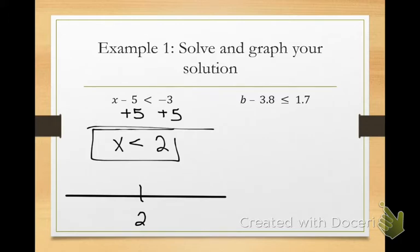Now, one unit to the left of 2 would be what? 1. One unit to the right of 2. 3. Now according to my inequality symbol, is this an open or a closed dot? Open. Open dot going to the? Left. Lefty loosey. Righty tighty.